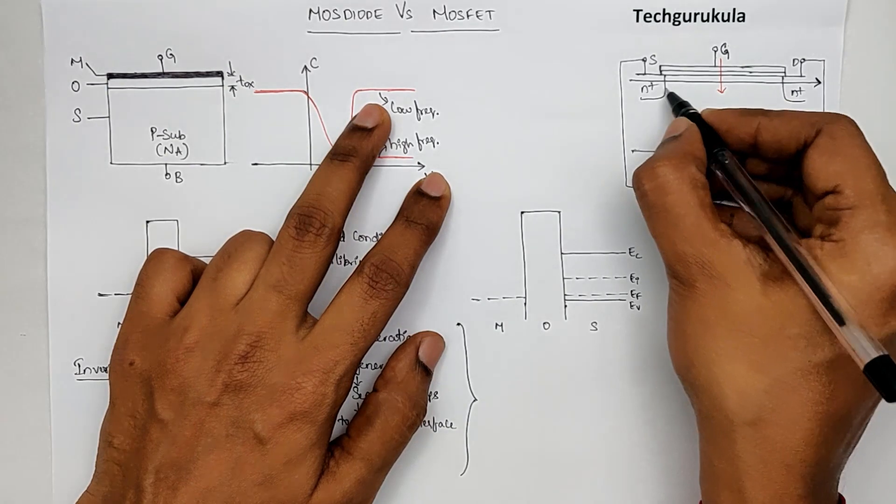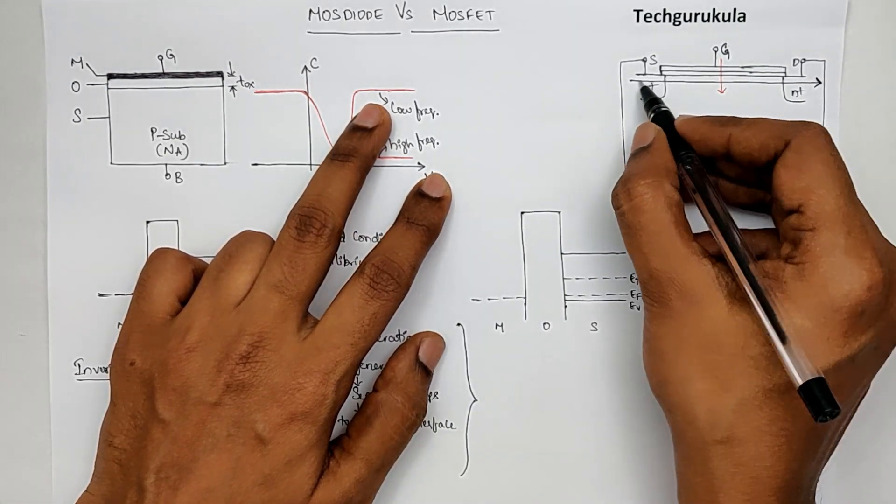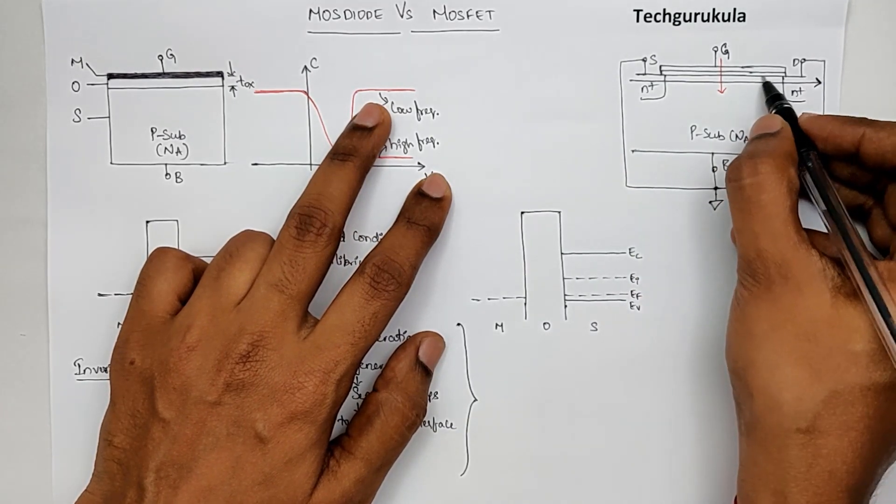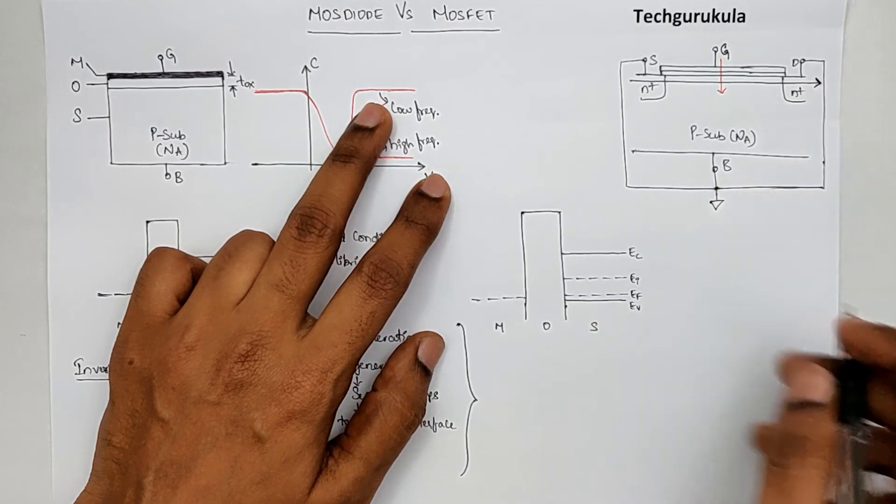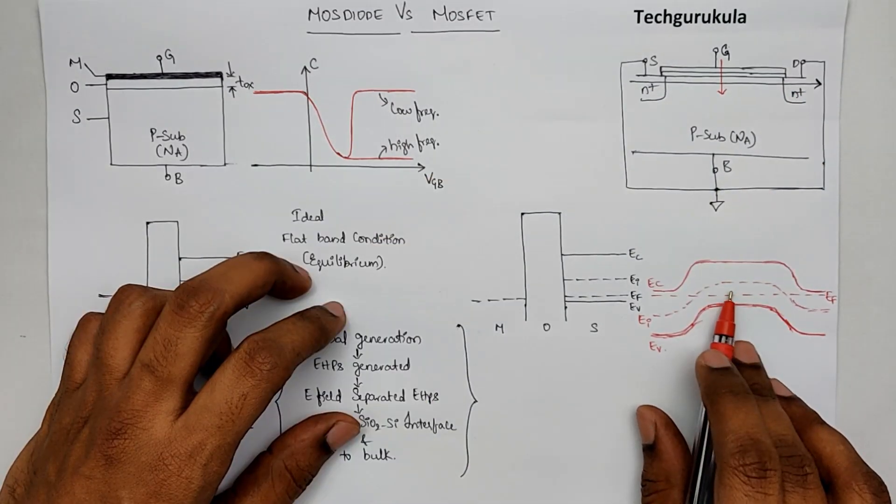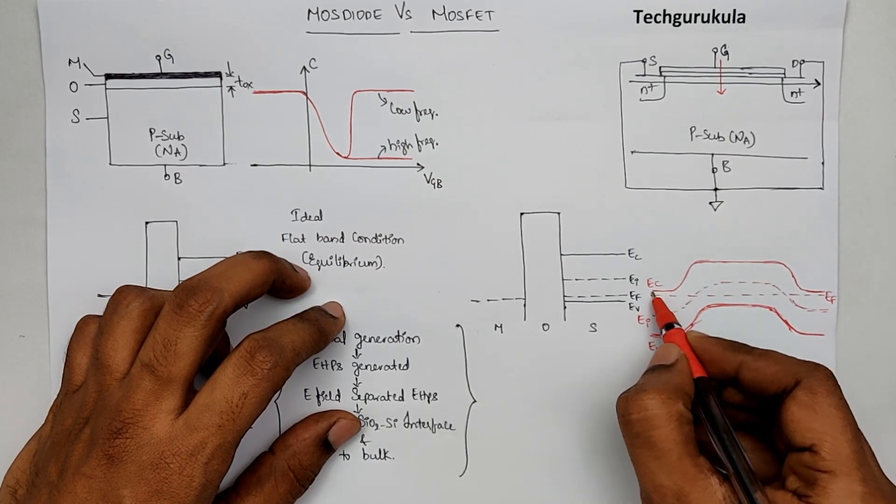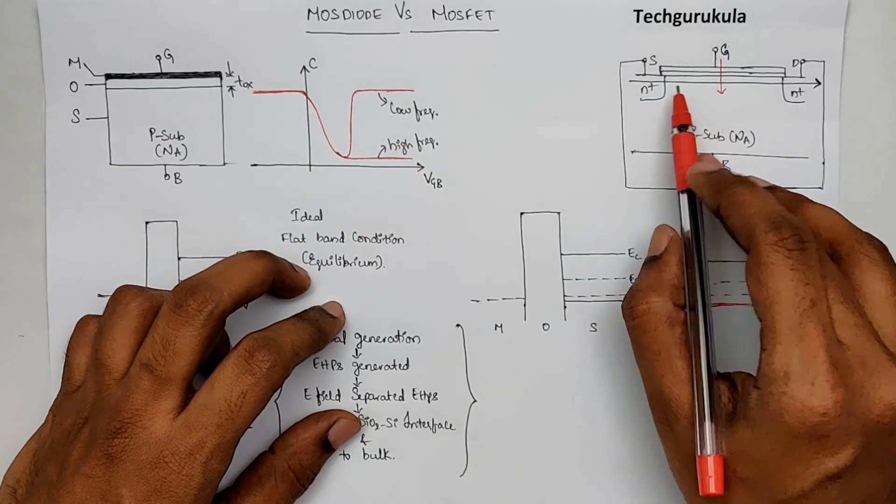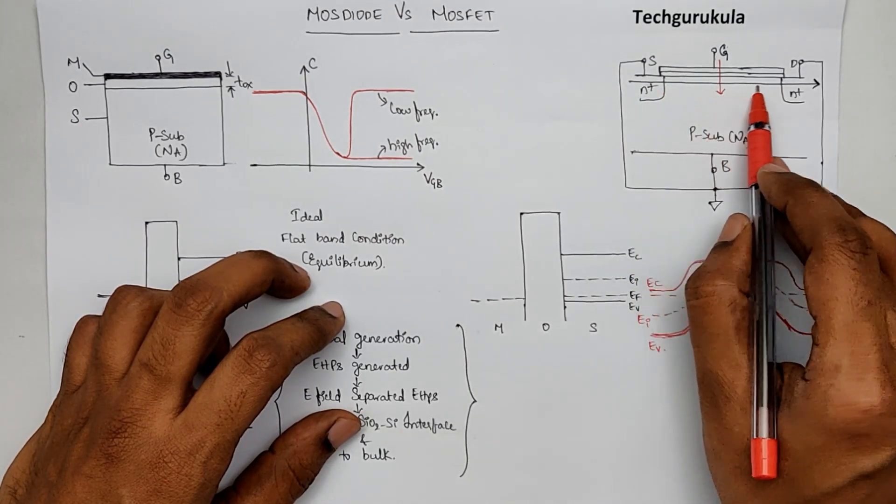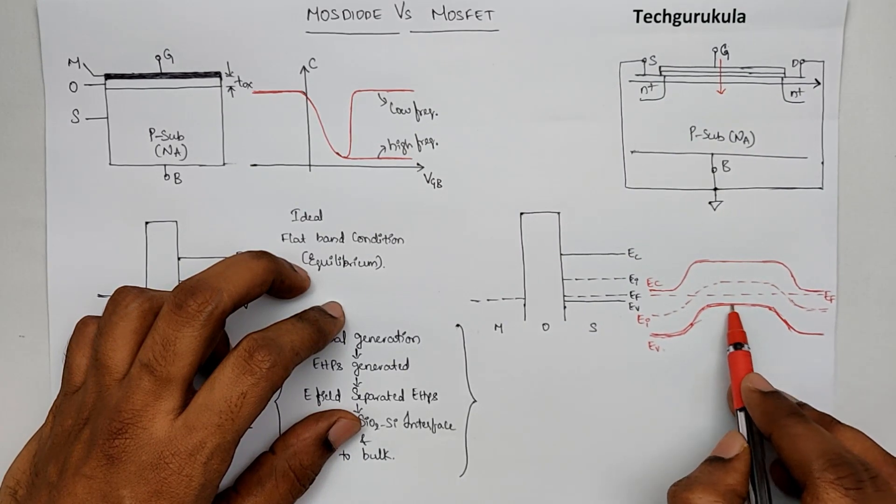This region is the source region where we have n-type semiconductor, where EF is close to EC. And when we come to this region, it is a P-type semiconductor. We have this where Fermi energy level is close to EV.